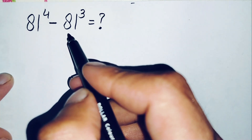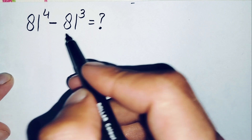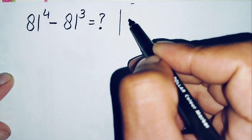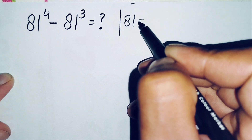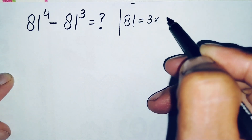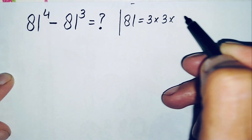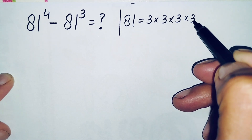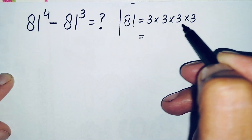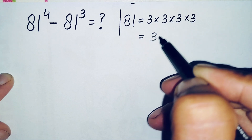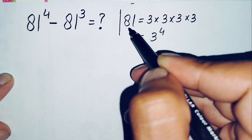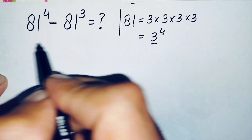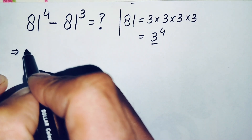First of all we will change these two bases to their exponential form — this 81 to its exponential form. We can write 81 as 3 times 3 is 9, 9 times 3 is 27, and 27 times 3 is 81. So 3 appears 4 times, meaning 81 equals 3 raised to power 4. We will replace the base 81 with 3 raised to power 4.